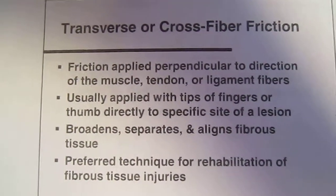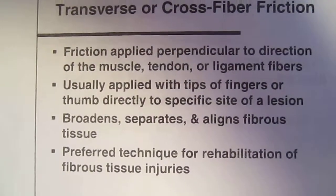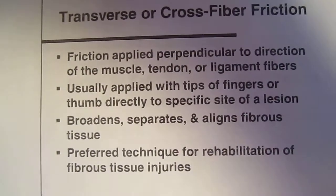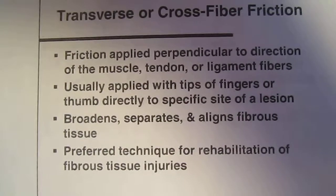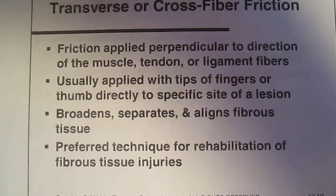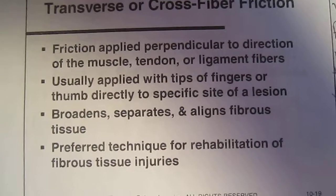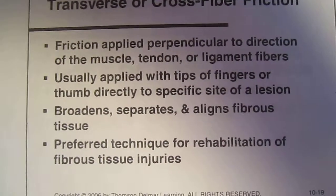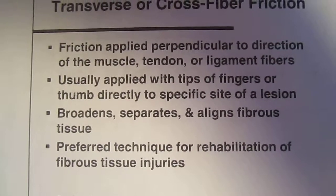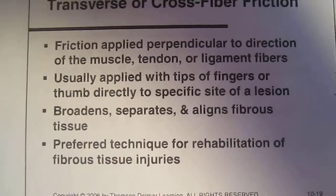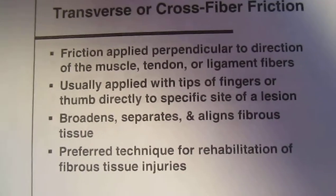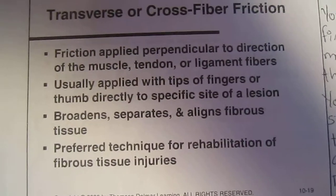Transverse or cross-fiber friction. Friction is applied perpendicular to the direction of the muscle, tendon, or ligament fibers, usually applied with tips of fingers or thumb directly to a specific site of a lesion. This broadness separates and aligns fibrous tissue. It is the preferred technique for rehabilitating fibrous tissue injuries.